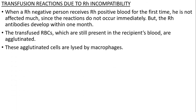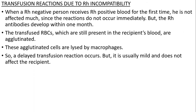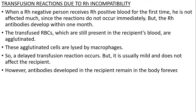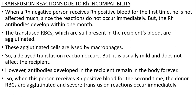These agglutinated cells are lysed by macrophages. So a delayed transfusion reaction occurs, but it is normally mild and does not affect the recipient. However, antibodies developed in the recipient remain in the body forever. So when this person receives Rh-positive blood for the second time, the donor RBCs are agglutinated and severe transfusion reaction occurs immediately.